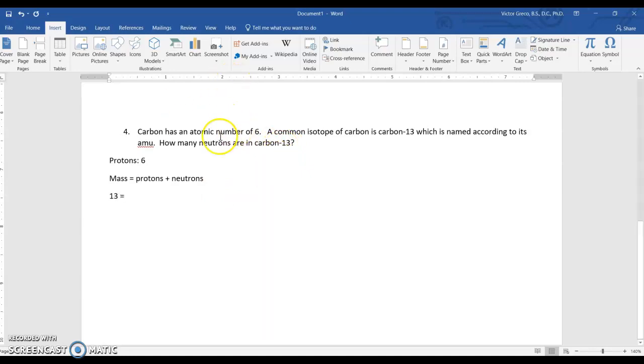All right, so the mass is 13. How many protons are there? Well, we know that. It's the atomic number. It's 6 plus neutrons. So right away we can figure that out. 6 plus what equals 13? And it happens to be 7. So there's your answer.